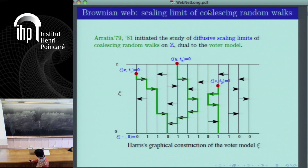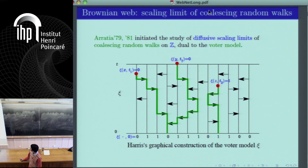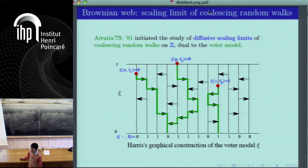The topic of the Brownian Web originally started with the PhD thesis of Richard Aradia in 1979. In his PhD thesis, he considered the following model. There is a classic interacting particle system known as the voter model, depicted here. This is a one-dimensional voter model. There is an integer lattice; at each position, a particle carries one of two values, either 0 or 1. These can be regarded as the opinions of two different political parties, and the dynamics is the following.